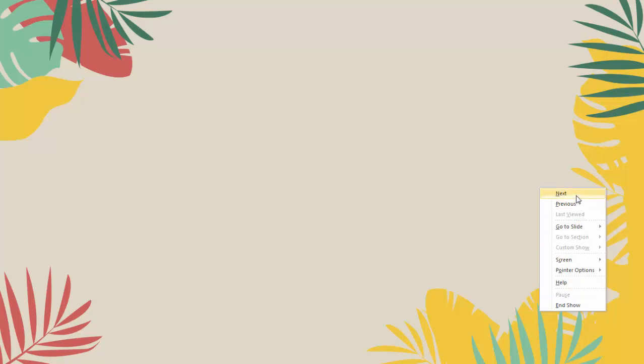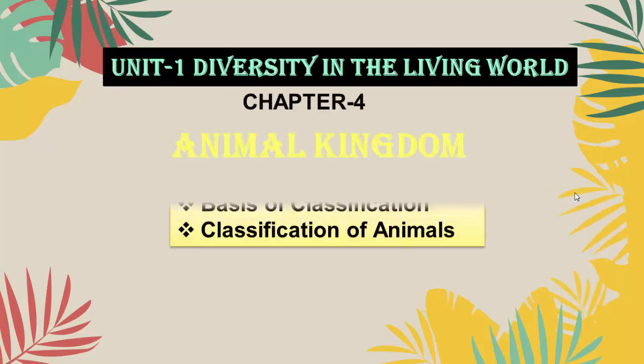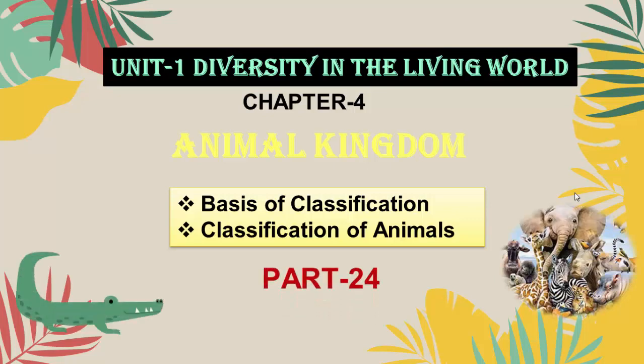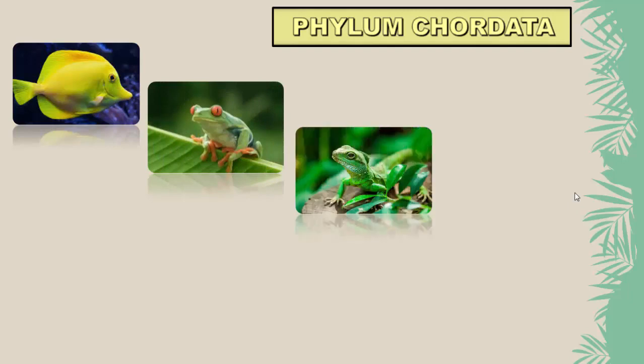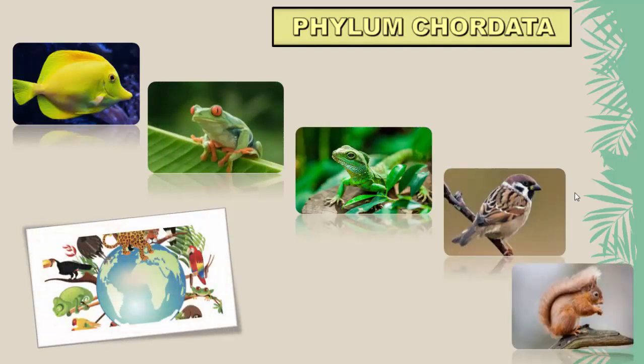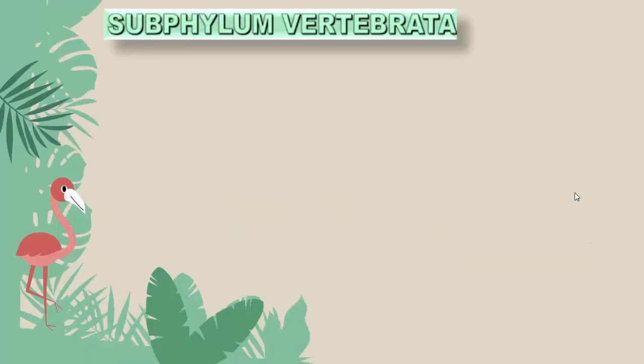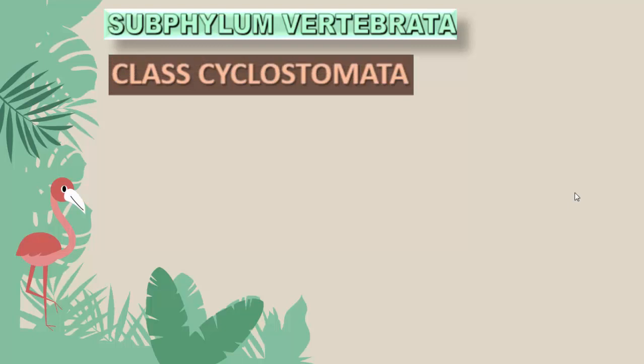Hello dear students, let us move to the next part of animal kingdom. In this video I'm going to explain about Cyclostomata and the superclass Pisces. Phylum Chordata consists of animals with a backbone. Today let us continue the study of subphylum Vertebrata. The three subphyla are Hemichordata, Urochordata, and Vertebrata, so Vertebrata is one subphylum of phylum Chordata.